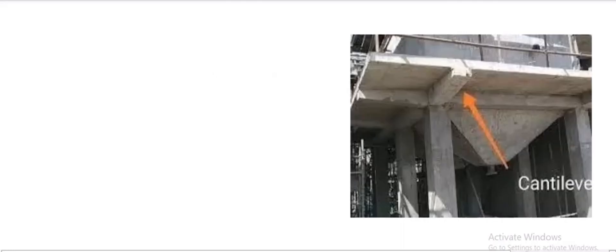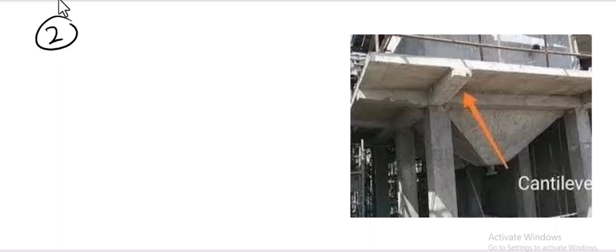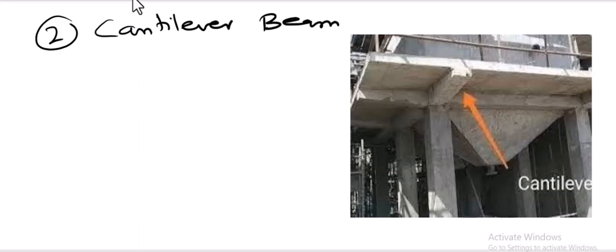The second type of beam is the cantilever beam. A cantilever beam is a type of beam whose one end is fixed and the other end is free.